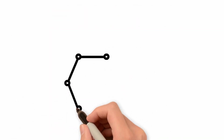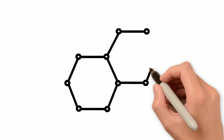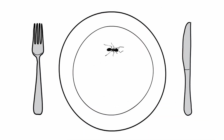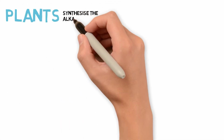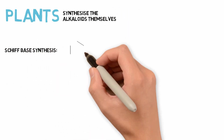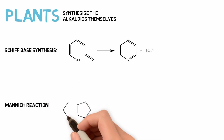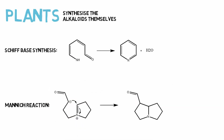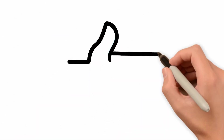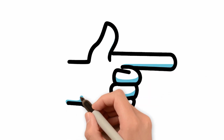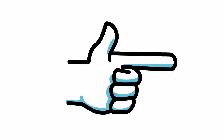It was first thought that these frogs produce these toxic compounds themselves, but they are actually derived from their diets of ants, centipedes, mites, and termites, which in turn get them from the plants in their diets. These plants synthesise the alkaloids themselves in countless different ways, two of which are by Schiff-base syntheses and Mannich reactions. The toxins are absorbed into the glands in the frog's skin, making many species too poisonous to touch.